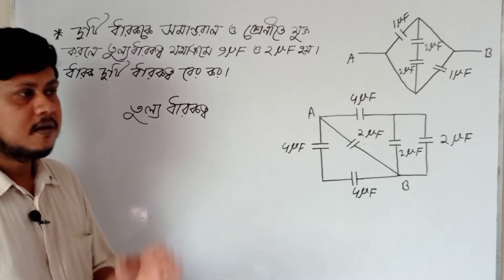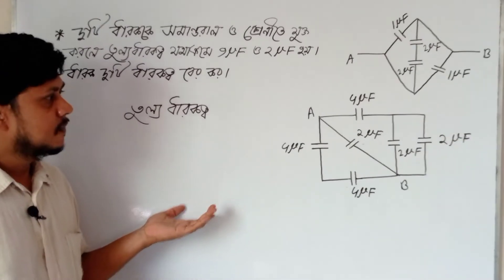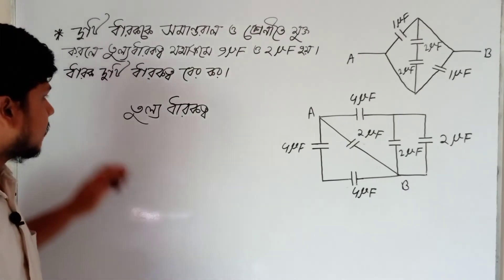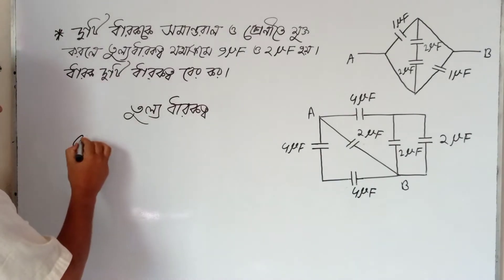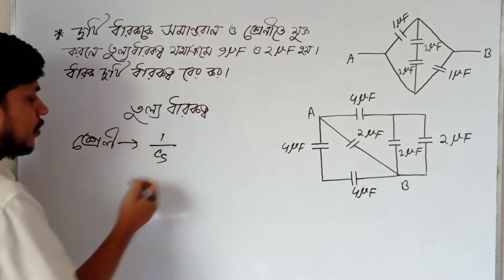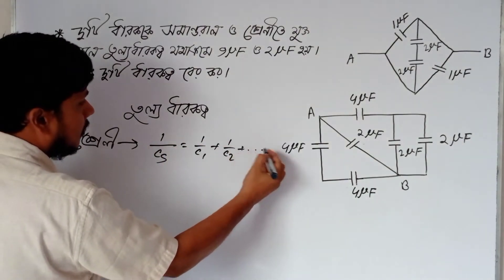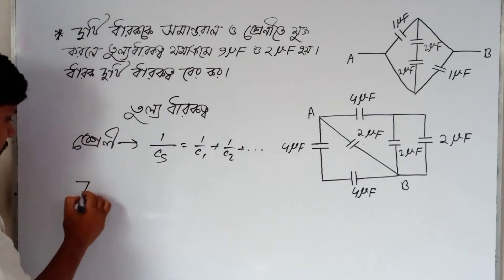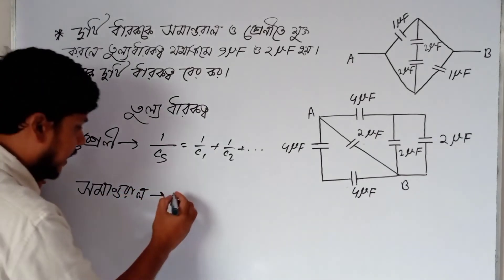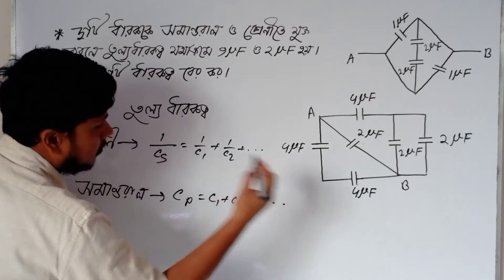I will show you how to use the capacitor formulas. For parallel combination, the equivalent capacitance Cp equals C1 plus C2 plus dot dot dot. In the case of parallel combination, the total capacitance: Cp equal C1 plus C2 plus dot dot.